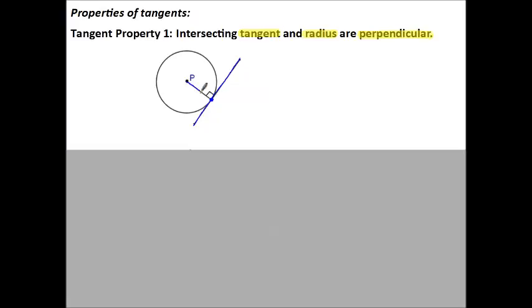And we have a radius that goes from the circle and these two are perpendicular. That means they form a 90 degree angle. And that is the same no matter where that tangent touches.